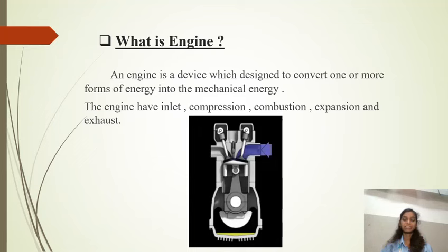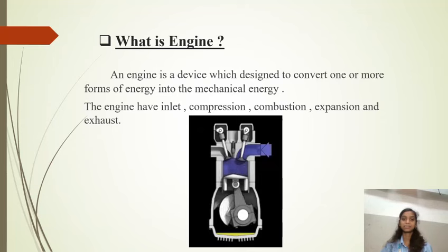As we know, every vehicle has an engine. So what is an engine? An engine is a device which converts one form of energy into mechanical energy. The engine has five main operations: inlet, compression, combustion, expansion, and exhaust. Here is a working of an engine — the engine works like this.